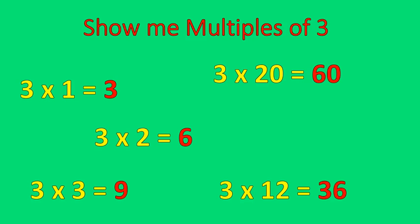We multiply something times 3 and it gives us a multiple of 3. So 3, 6, and 9 are all multiples of 3. That's it — that is as basic as it gets. These are multiples of 3, all of them.